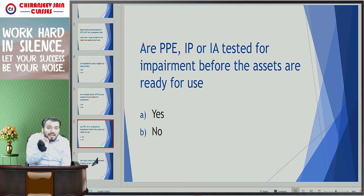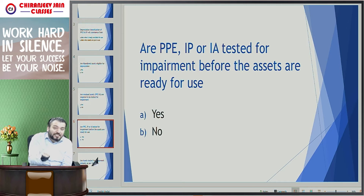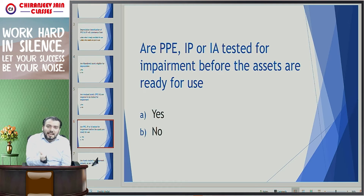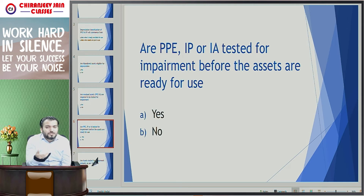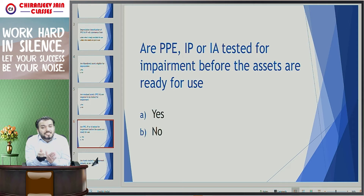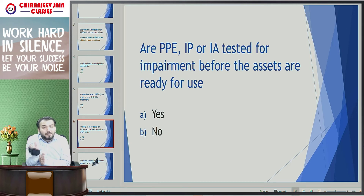What Ind AS 36 says is that any intangible asset not yet available for use will be tested for impairment even though it is not yet available for use. So we can conclude that any property, plant and equipment and any investment property will be tested for impairment only once the asset is ready for use. But intangible assets need to be tested for impairment on an annual basis even though the asset is not yet available for use.